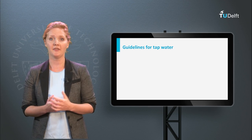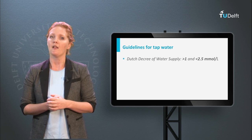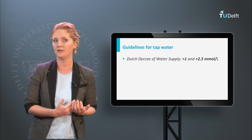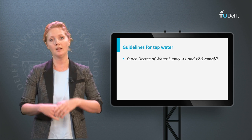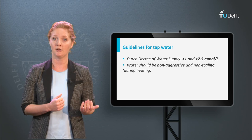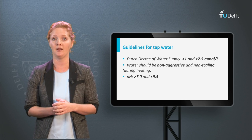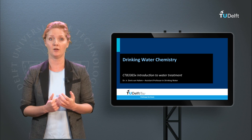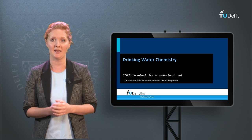The guidelines for tap water are not the same around the world, but I will briefly summarize the guidelines as we know them in the Netherlands — the Dutch Decree of Water Supply. These standards include that the hardness should be between 1 and 2.5 millimoles per liter, because if the hardness is too low it may result in locally aggressive waters, and from a health perspective it is also desirable to have some hardness in the water. If the hardness is too high, it may result in scaling once heated, as described with the Tillmann's curve. So the water should neither be aggressive nor scaling. The pH should therefore be within the range of 7 and 9.5, and the saturation index should not be lower than −0.2. We have come to the end of this lecture about basic water quality calculations. I thank you for watching and recommend practicing the homework exercises to get more familiar with these basic but crucial parameters.